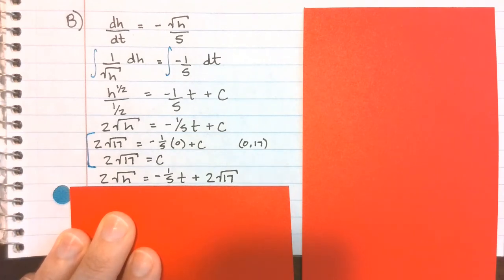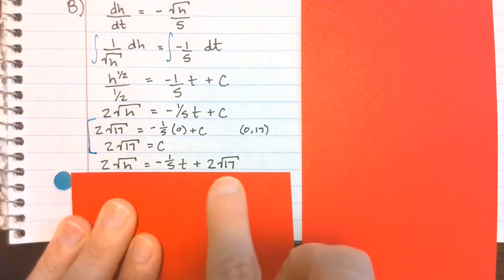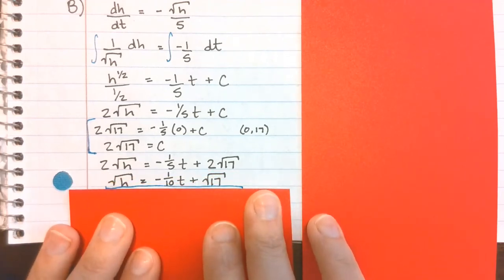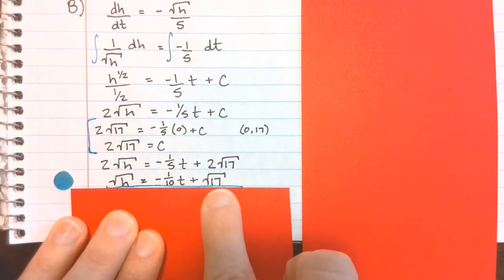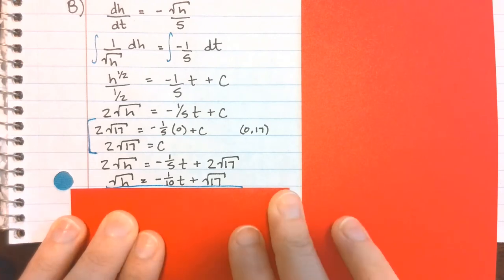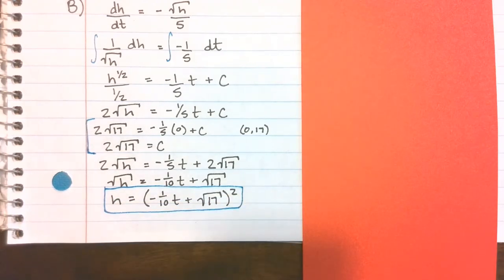I do want to go ahead and solve for h as my last hurrah. Dividing both sides by 2, I'll have negative 1/10 t plus √17, and then to get rid of the radical, squaring everything. So the other side ends up being squared. There is my solved differential equation for h.